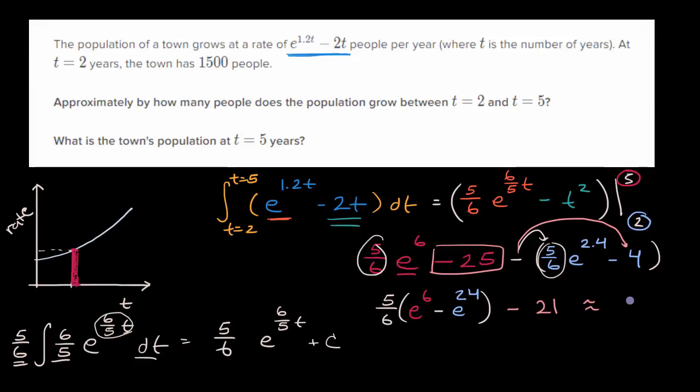So approximately by how many people does the population grow between t equals two and t equals five? Well, by approximately 306 people. And they say, what is the town's population at t equals five? Well, at time two, at two years, we had 1500 people. And then we grow over this interval by 306. So plus 306, well that's going to get me to 1,806 people at t equals five years.